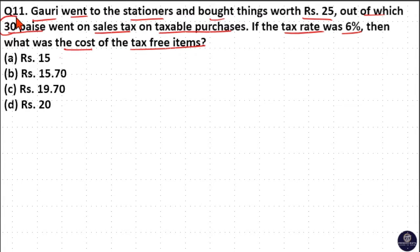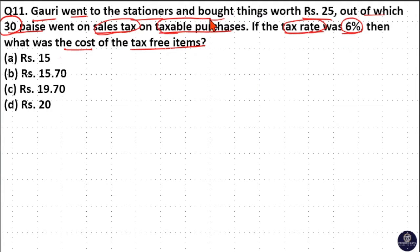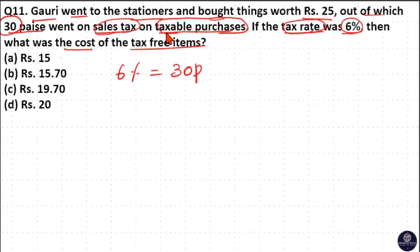Here, 30 paise is for sales tax and the tax rate is 6%. So 30 paise equals 6%, which means the cost of the taxable item is 100% of this. If 6% is 30 paise, then 100% is the cost of taxable purchases.